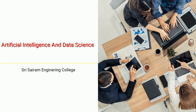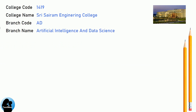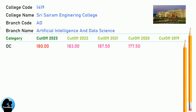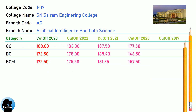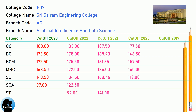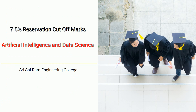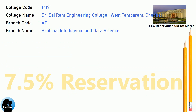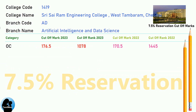DNA Cut-off for Shri Sairam Engineering College in Artificial Intelligence and Data Science. DNA 7.5 Reservation Cut-off for Shri Sairam Engineering College in Artificial Intelligence and Data Science.